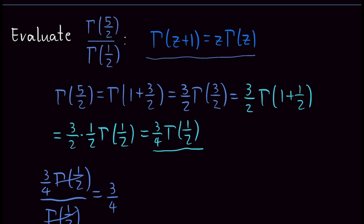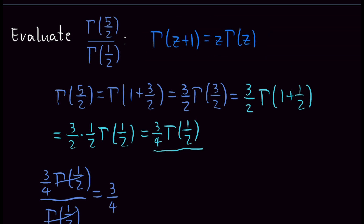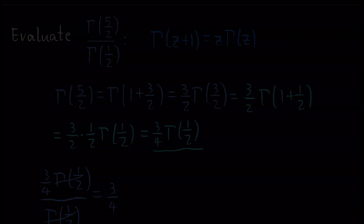The gamma function is more useful than just this recursive property. We can use it to evaluate integrals, find results in physics problems, and asymptotically approximate the factorial function. The factorial describes a lot of things in nature, and I hope to see you in the next video.